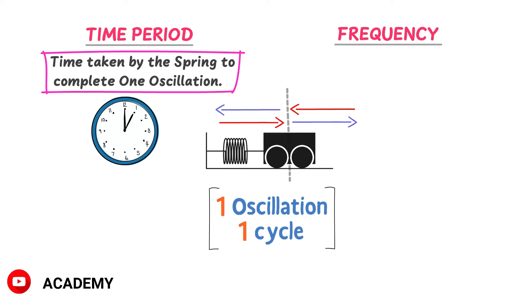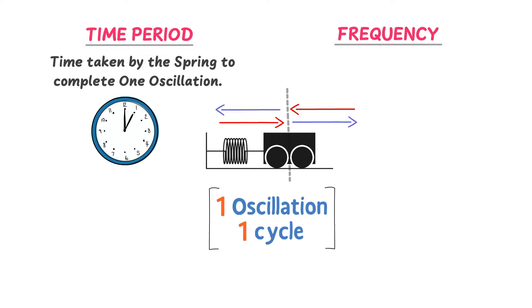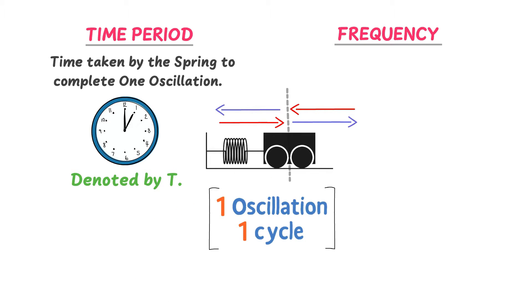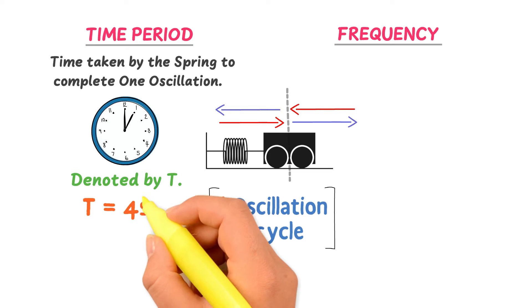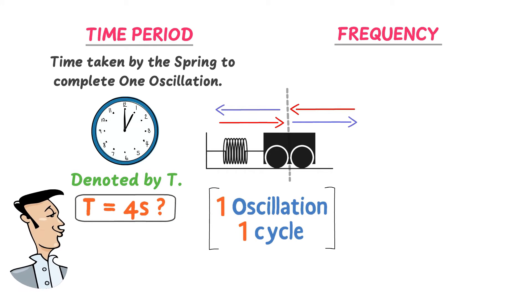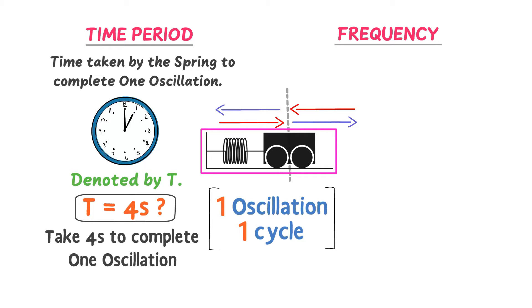Time taken by the mass to complete one oscillation or one cycle is called the time period. Remember that time period is denoted by capital T. If I ask you what is meant by T equals four seconds — it means this spring will take four seconds to complete one oscillation or one cycle.